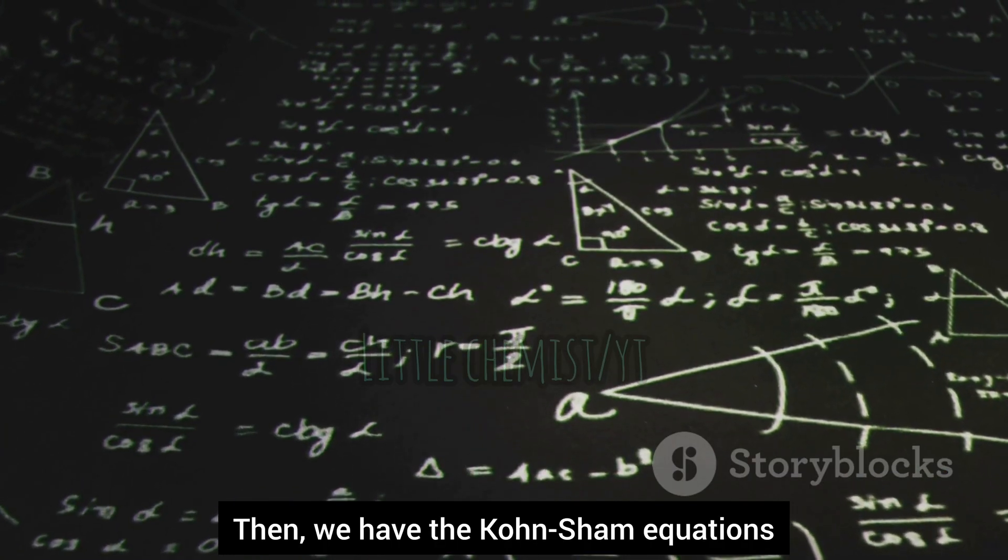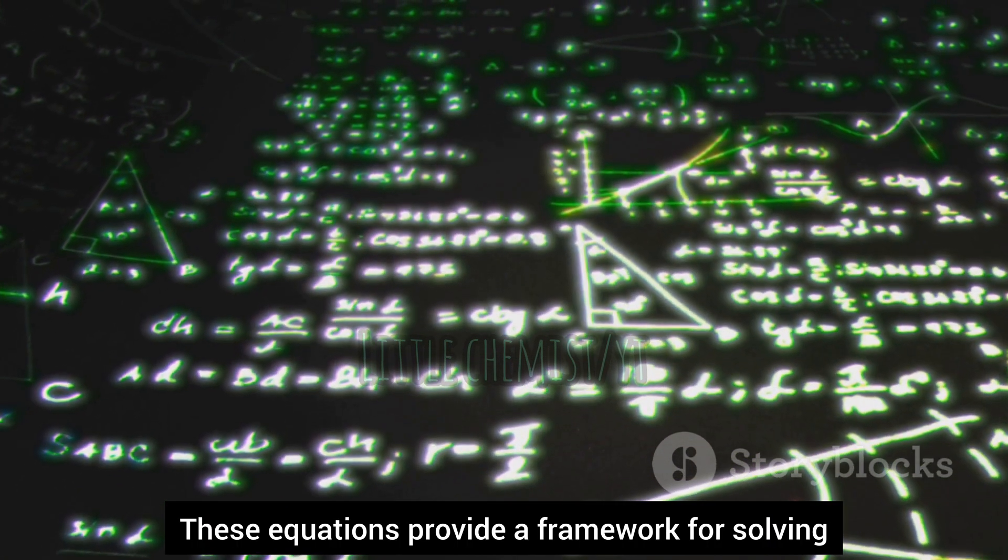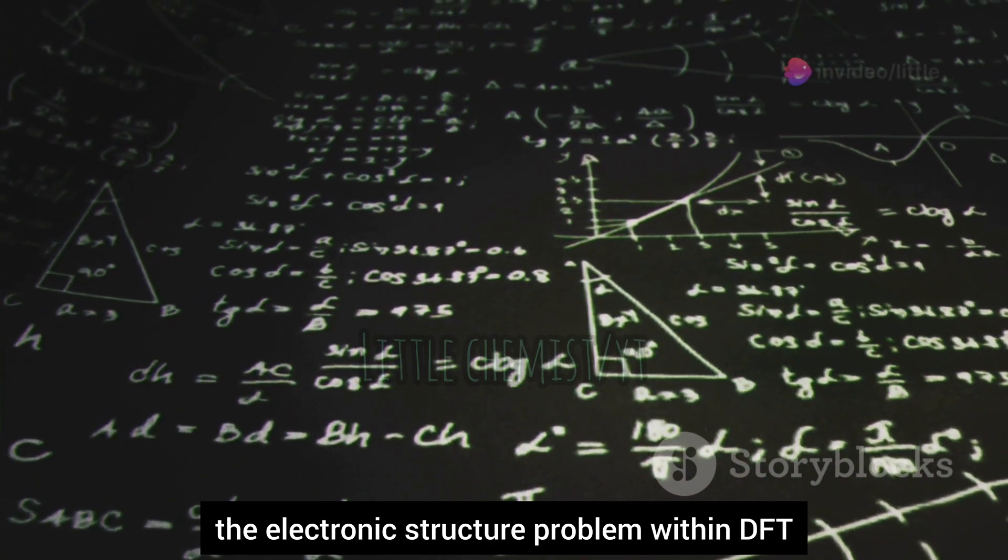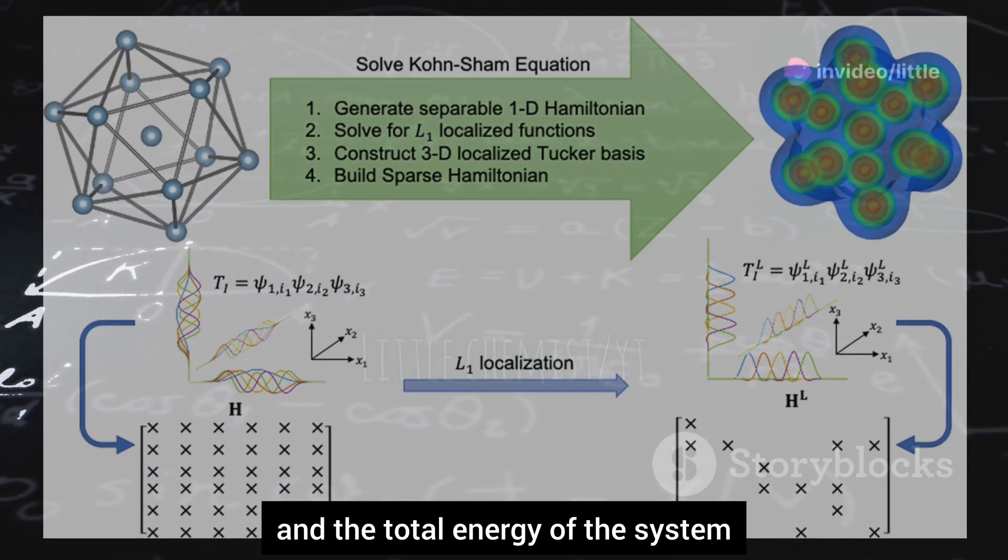Then we have the Kohn-Sham equations. These equations provide a framework for solving the electronic structure problem within DFT. When solved, they yield the electron density and the total energy of the system.